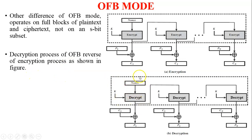In the decryption process, the same nonce is used, and on both the encryption and decryption sides the same key K is used. The decryption process output and C1 — ciphertext 1 — are XORed with each other and it generates plaintext P1.